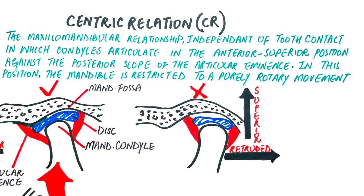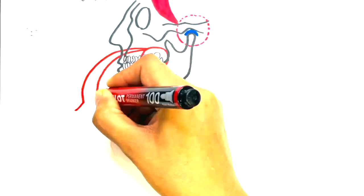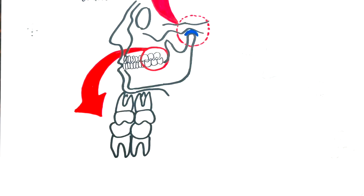Centric relation, as said here, is independent of tooth contact, meaning that it has nothing to do with how our teeth in both jaws occlude while the condyles are in centric relation. If we didn't have any teeth present in the oral cavity, like in edentulous patients, then the muscles of mastication would guide the condyle and pull that joint up into centric relation.